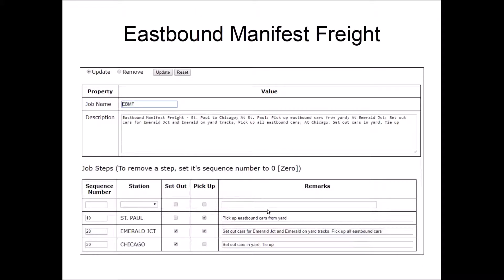So here you can see the job steps for the eastbound manifest freight. This is the manifest freight that starts in St. Paul, at the St. Paul Yard. And it goes through Emerald Junction and terminates in Chicago.